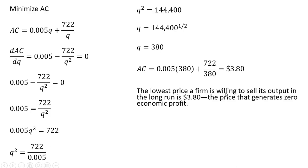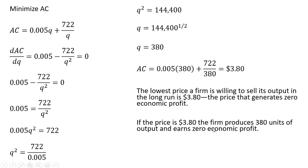So the lowest price a firm is willing to sell its output in the long run is $3.80, the price that generates zero economic profit. If the price is $3.80, the firm produces 380 units of output and earns zero economic profit. Okay, that's my problem.